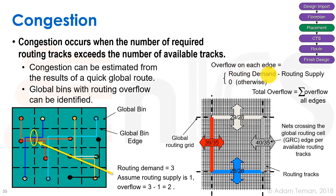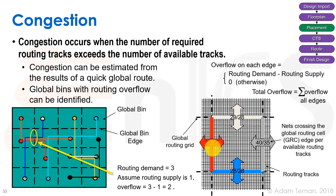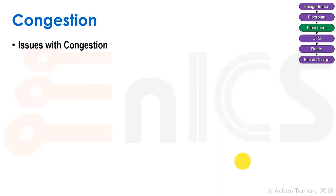Overflow on each edge is defined as routing demand minus routing supply. If routing supply is larger than routing demand, the overflow is zero. The total overflow is the sum of overflow over all edges. For example, in the horizontal direction a global cell might have a demand of 39 but a supply of only 35, giving an overflow of 4. Some areas may show overflow of 1, 5, or zero. Large overflow areas are really bad.